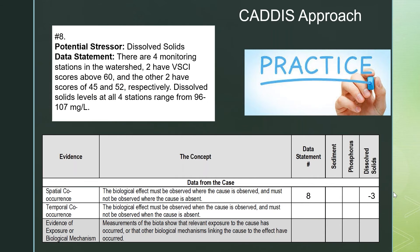To give you a little cheat on the first one — the same data statement involving dissolved solids — we had four monitoring stations, two with VISCI scores that were not impaired, two that were impaired, and we saw that dissolved solids at all four stations ranged 96 to 107. So for spatial co-occurrence, did we see high levels of the stressor where we saw poor benthic community scores? Well, no — we kind of saw the same level everywhere. So in that case, I would probably give this a negative three score. That's strong evidence that dissolved solids are not a stressor. Then you can go down through each data statement, identify what line of evidence it refers to, and give it a score as well.